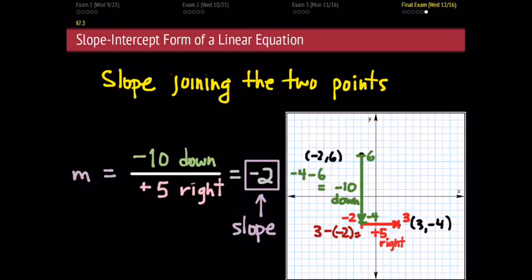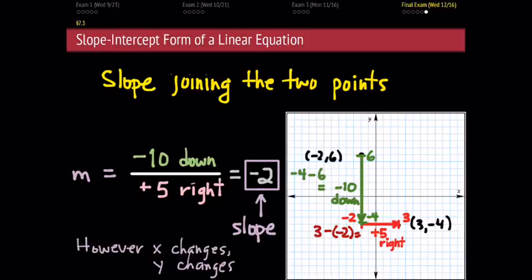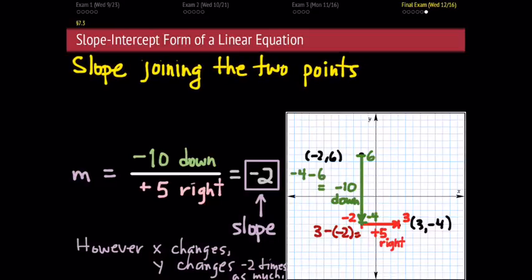Another way to say this: however much x changes horizontally along this graph, the value of y is going to change by negative 2 times as much. So if x goes up by 5, as it did here, y is going to go down by 10. If you prefer a formula to remember what we just did, we can make one — and this is typically what people endeavor to remember.